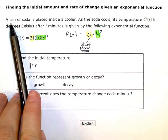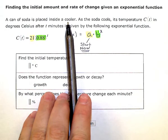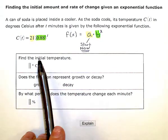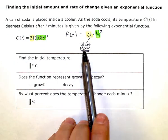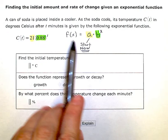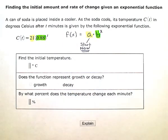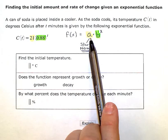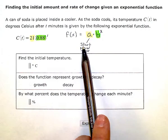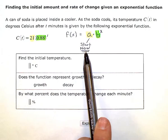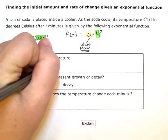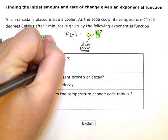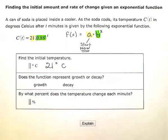So a can of soda is placed inside a cooler. We want to know the initial temperature. What's the temperature now? Or what does it start at when it's first placed inside of the cooler? So if we look at the equation, that start value or the initial value or the temperature now is represented by the 21. So it started at 21 degrees Celsius.